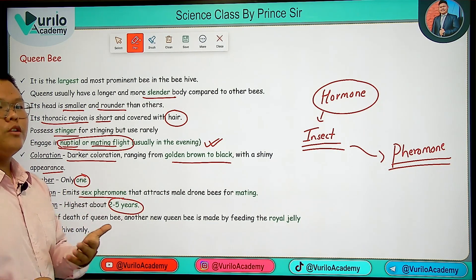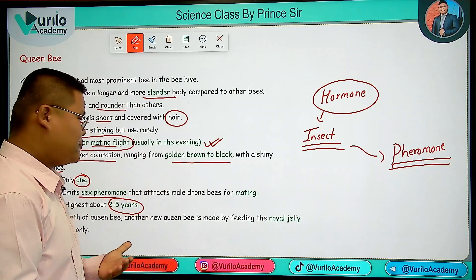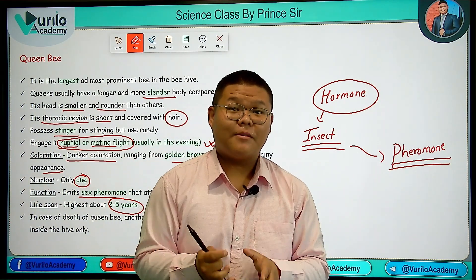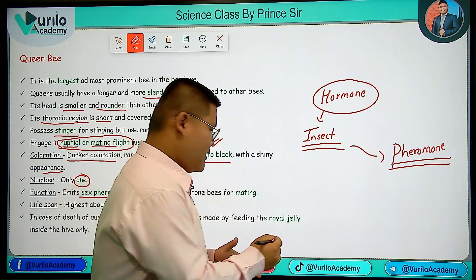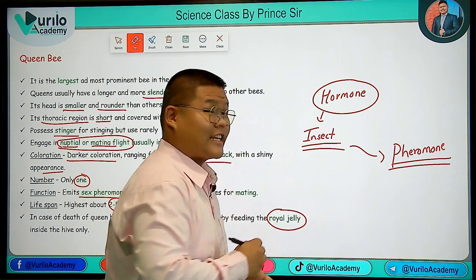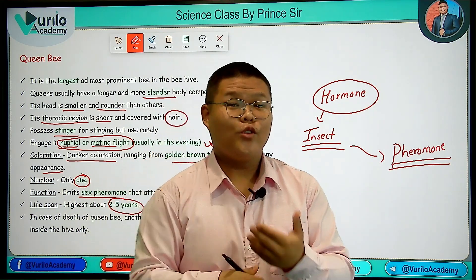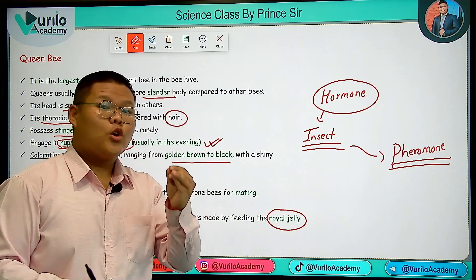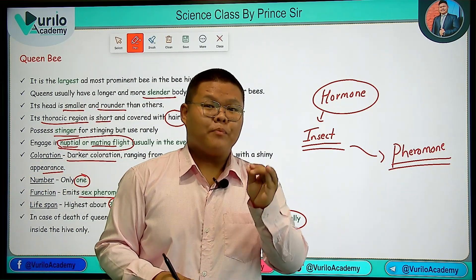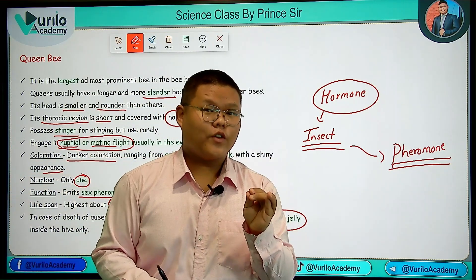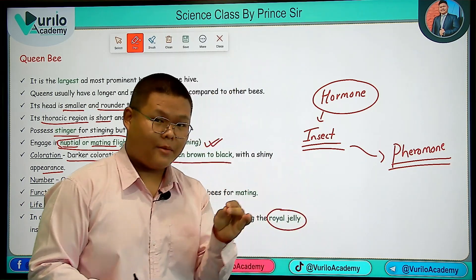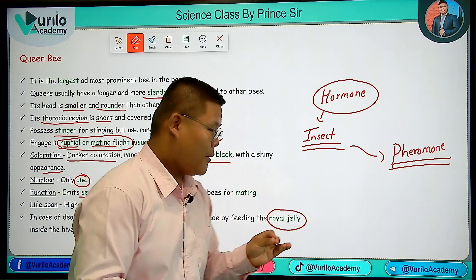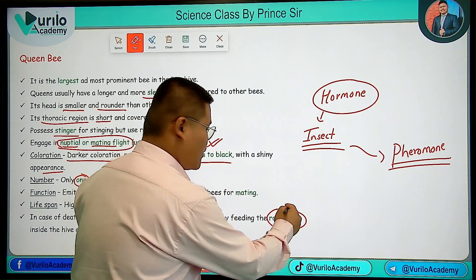If a Queen Bee dies, a new Queen Bee must be made ready — this is through Royal Jelly development. Remember, the Queen Bee holds together the whole honeybee colony. Throughout its entire lifetime, it is fed Royal Jelly. Royal Jelly is produced as a special substance.